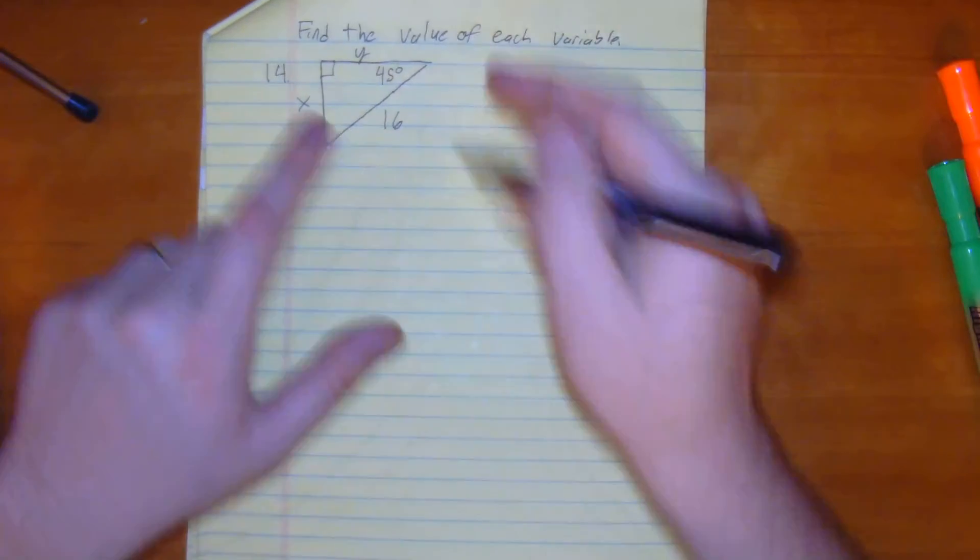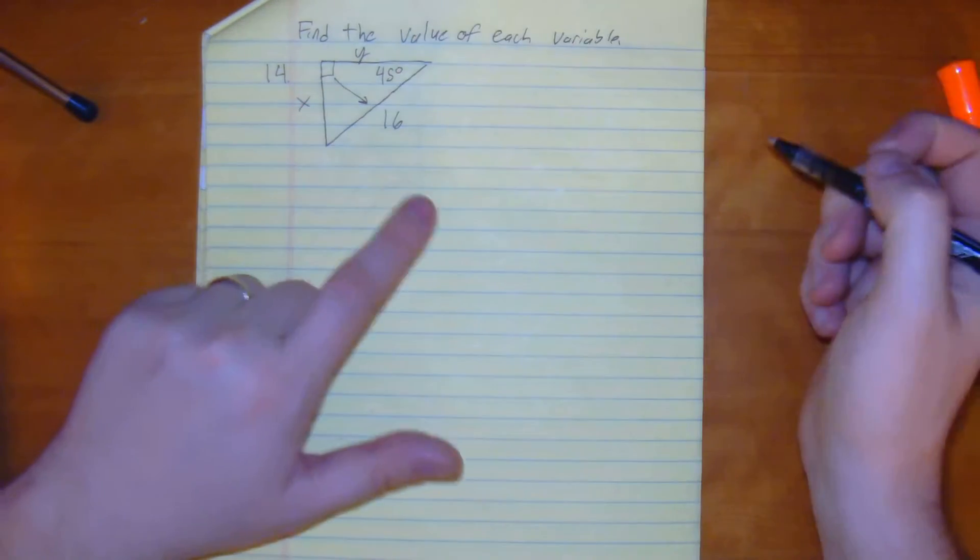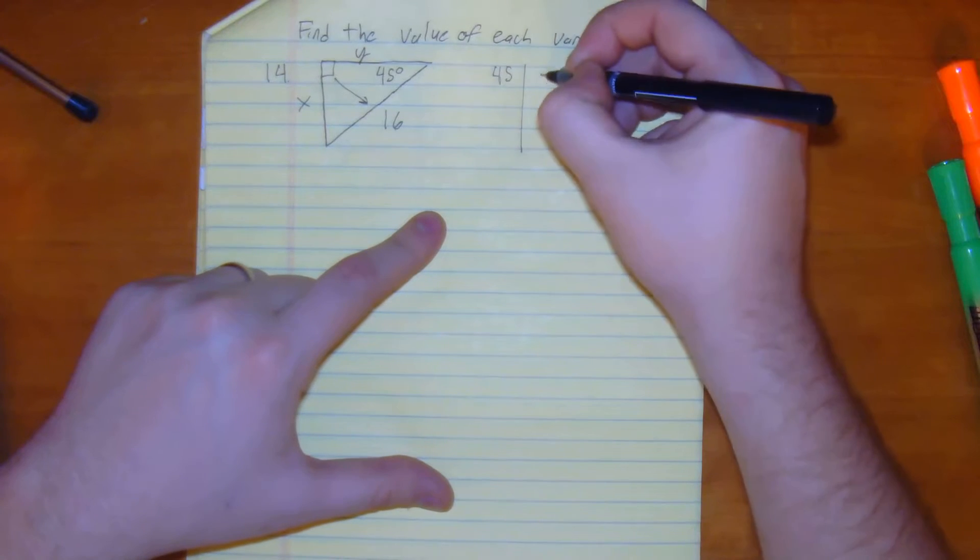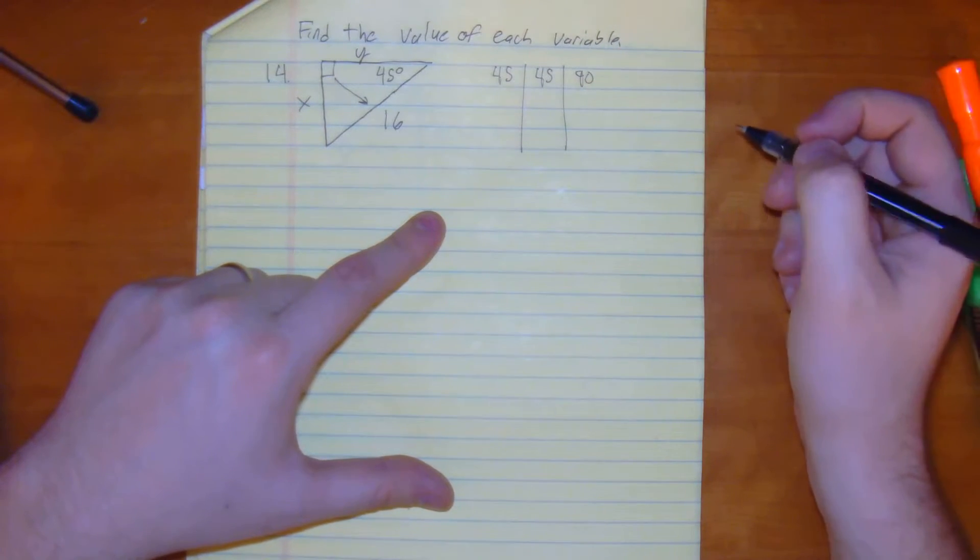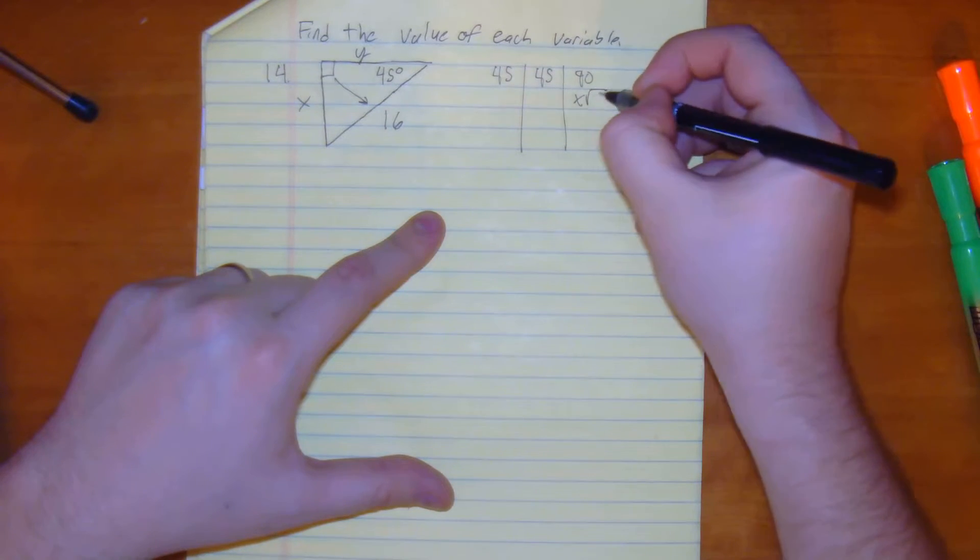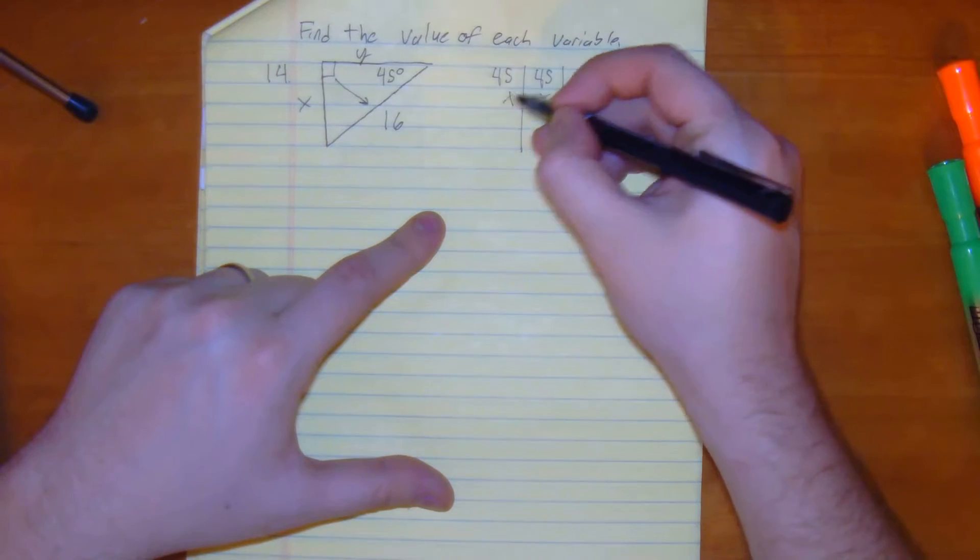What we're given is our hypotenuse. So let's write down what we know. We have 45, 45, 90. This is going to be x square root 2, x, x.